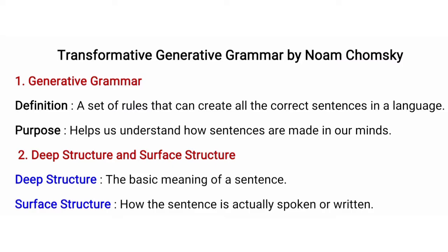First of all we will discuss about generative grammar. Generative means to generate, and grammar means following a set of rules to create sentences. So generative grammar means generating a lot of sentences with a set of grammar rules. For example: I am going to school, he is going to school, she is going to school, she is going to the park — by following one grammatical structure we can generate many sentences.